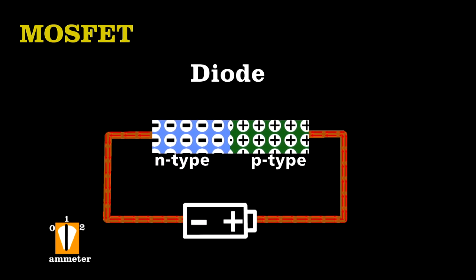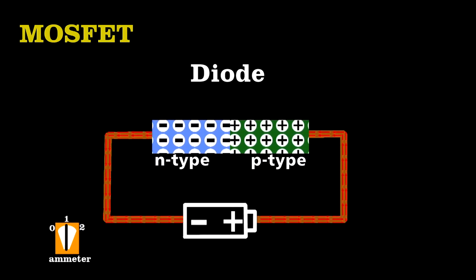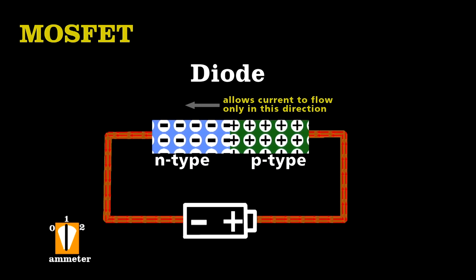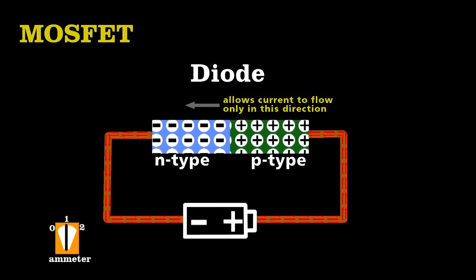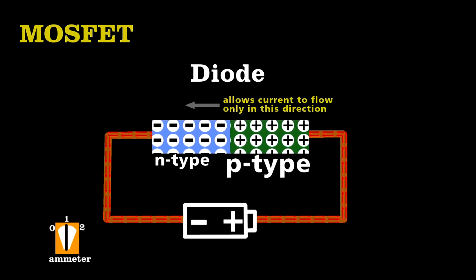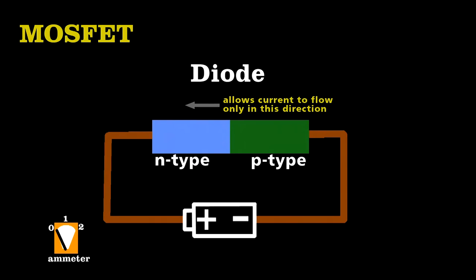Like every transistor, its operation depends on being able to make diodes from semiconductors. Recall that a diode allows current to pass in only one direction, because it uses two types of semiconductors, a type that uses negative charge carriers, and one that uses positive charge carriers. Flip that battery, and the flow of charge stops.